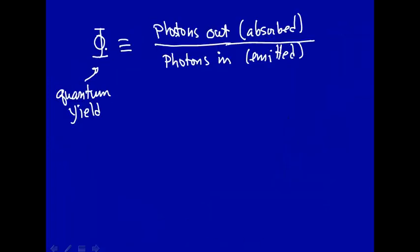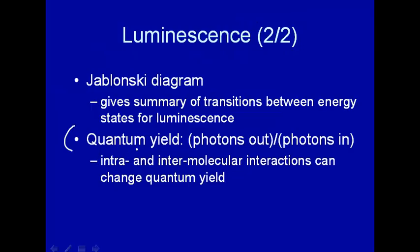Now quantum yield is an important quantity in chemistry because quantum yield is affected by intra and intermolecular interactions. So as we'll see in just a minute, one can determine something about the motion of the molecule that's fluorescent, or the particular environment the fluorescence finds itself. So that's a brief introduction to luminescence. We're now going to talk in more detail about fluorescence.